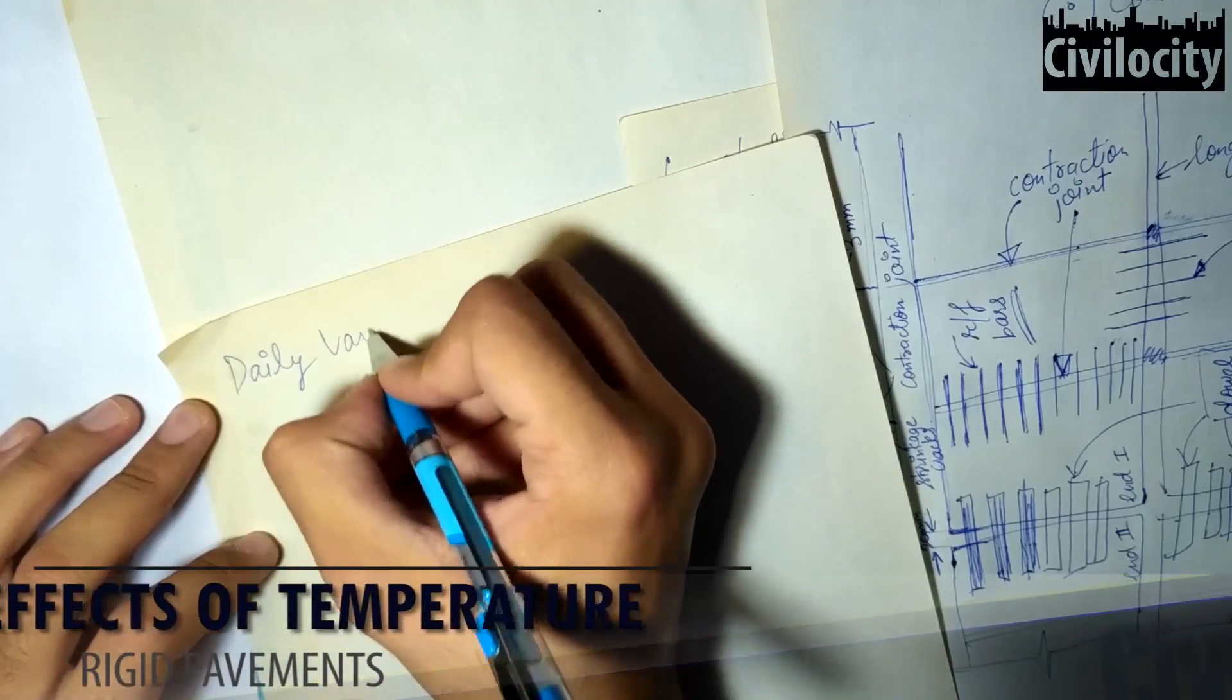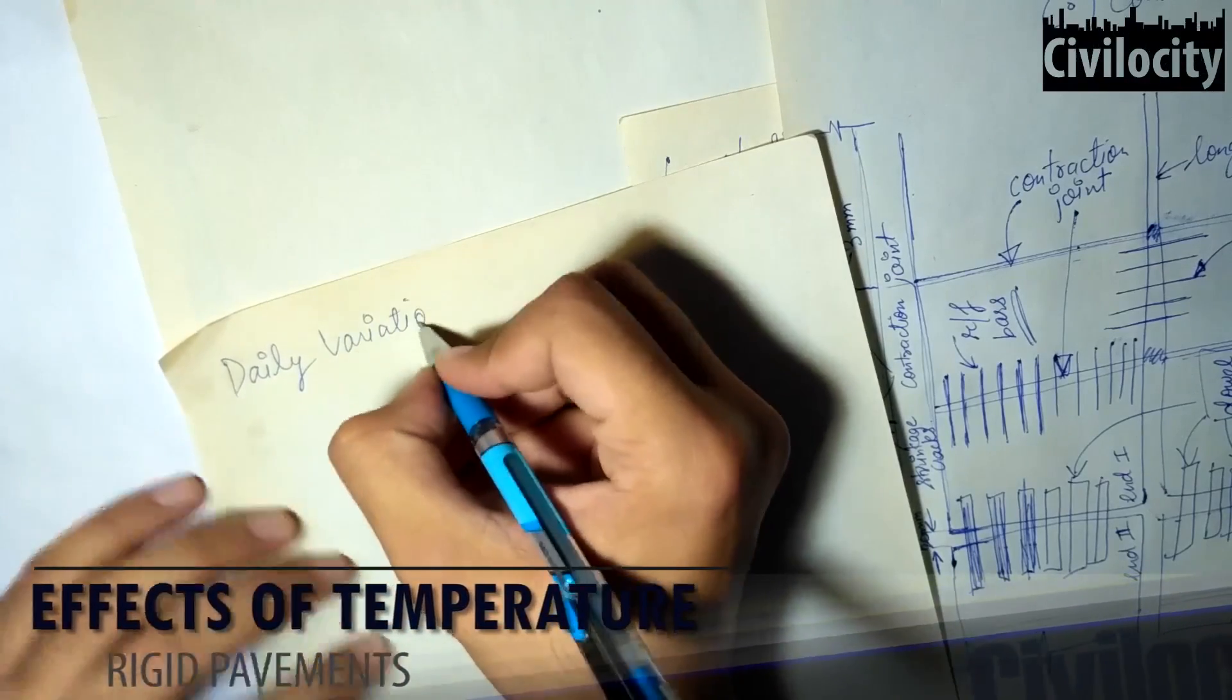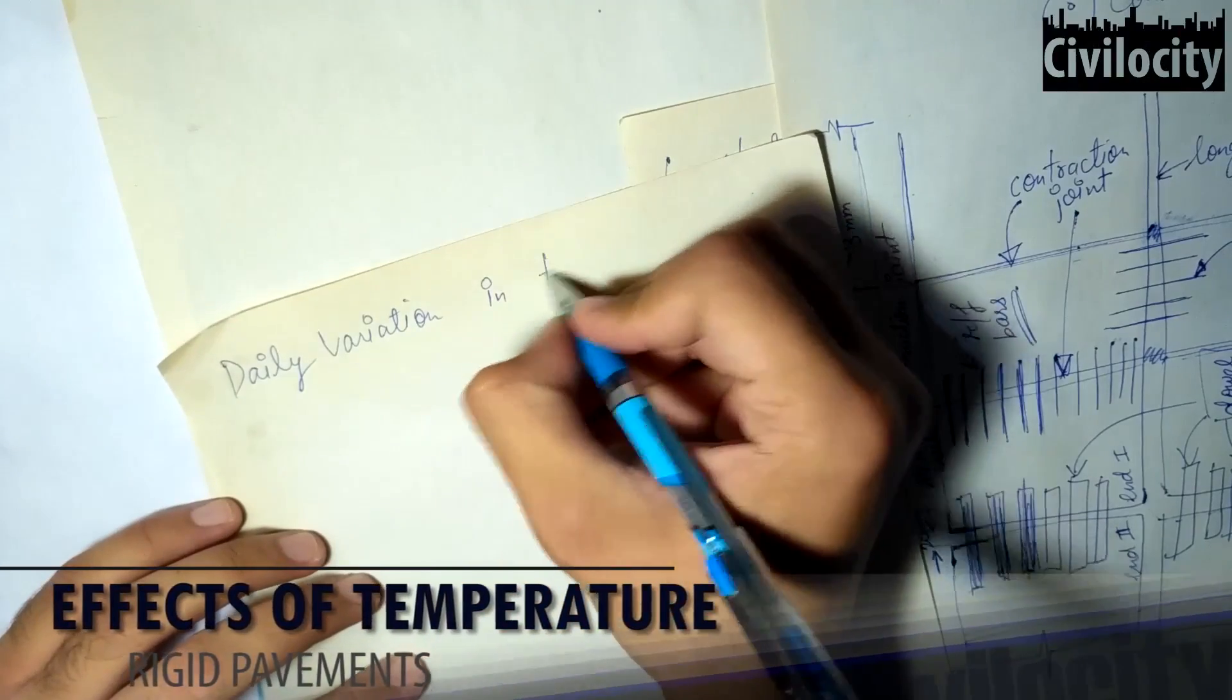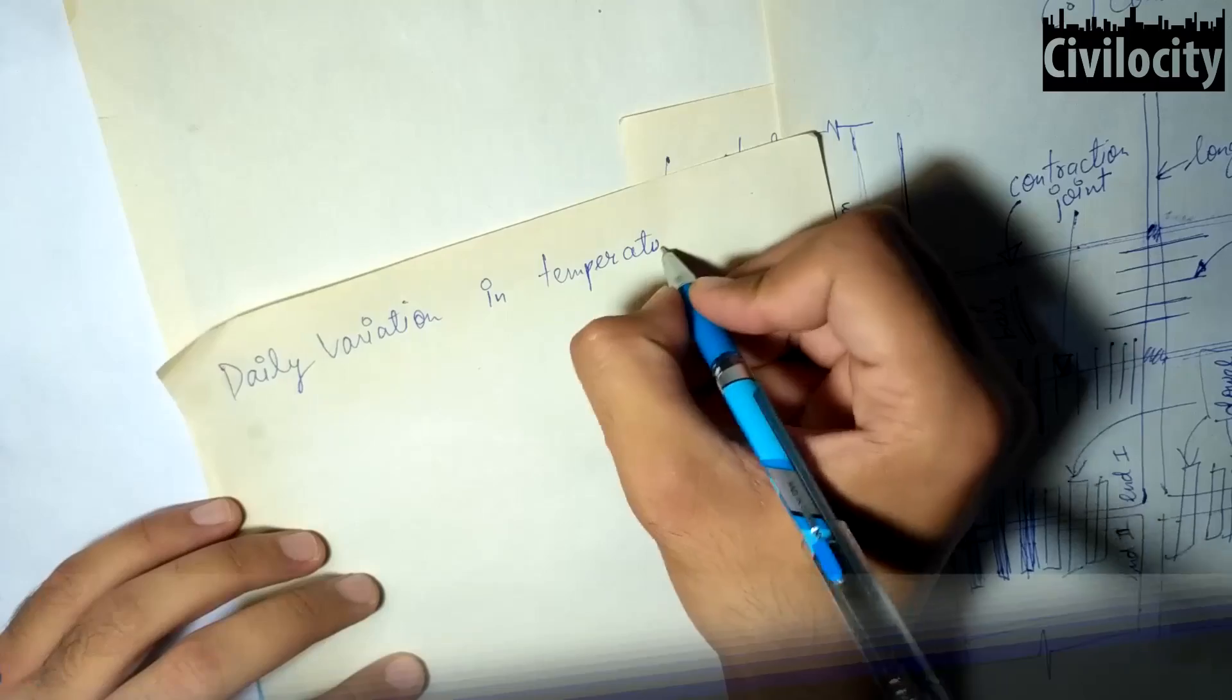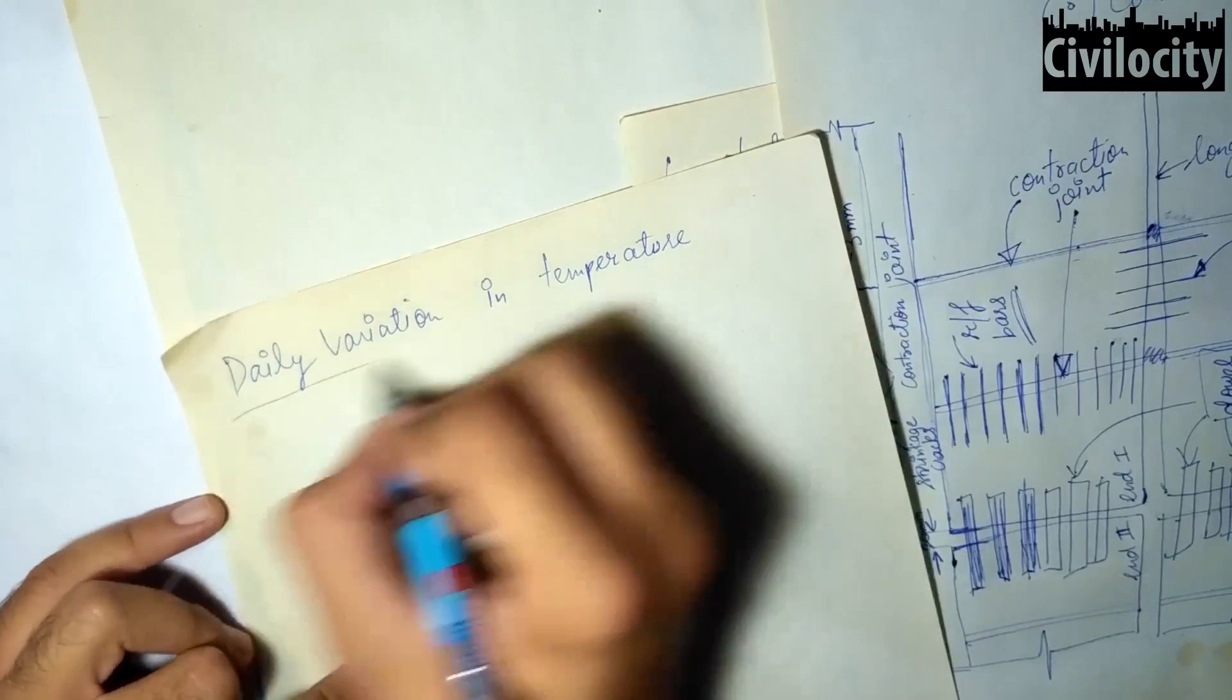Alright, now let's talk about the daily variations in temperature and warping stresses in rigid pavements. Warping is caused due to the temperature variations in the top surface and the bottom surface of the pavement layer.